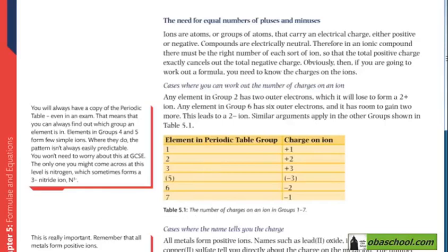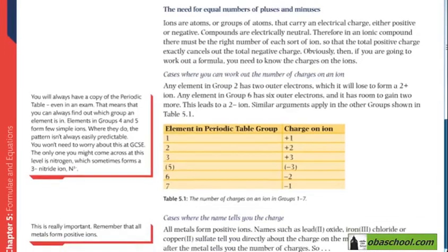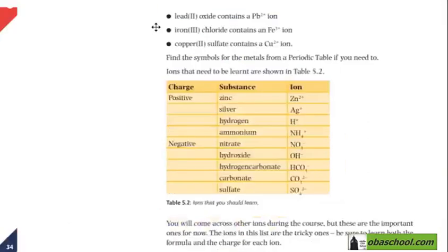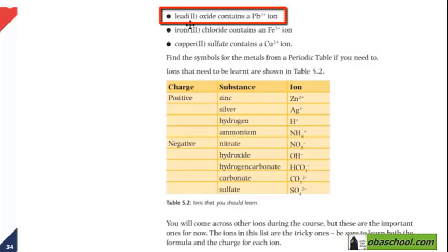We will discuss these in later videos. In some cases, the name gives you the charge. For example, lead 2 oxide—notice this 2 in Roman numeral—it means that lead has a charge of 2 plus in this compound. And therefore, Pb2+. Iron 3 chloride means that iron has a charge of 3 plus.